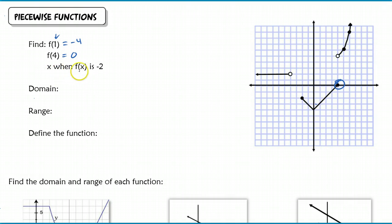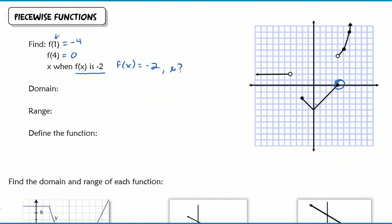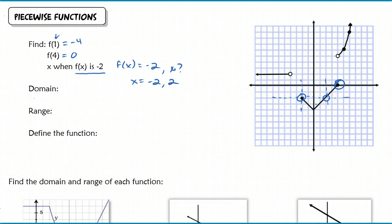Alternatively, when we're asked to find an input when given an output - in this example it says find x when f of x equals negative 2. So what is x? We go to negative 2 on our graph and we get two different x values: x equals negative 2, but it is also equal to positive 2. These are your x values when f of x is negative 2.